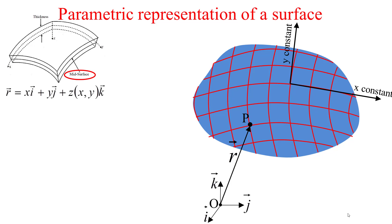Point P is located in space with regard to the frame of reference O, I, J, K by its position vector R, where R equals X along I, Y along J, and Z along K. Here X, Y, and Z are the coordinates of point P. Note that Z is a function of X and Y, so the location of P is exclusively determined by its coordinates X and Y.